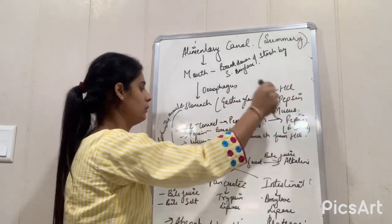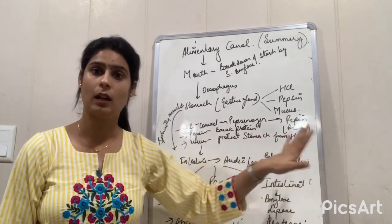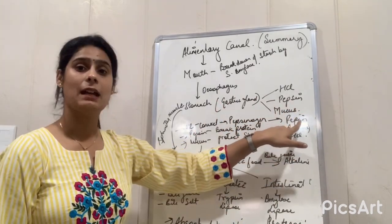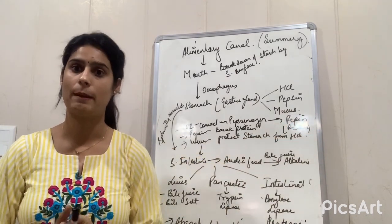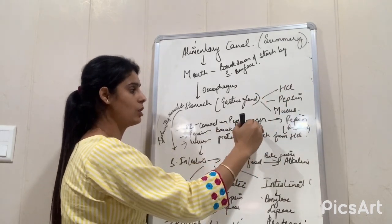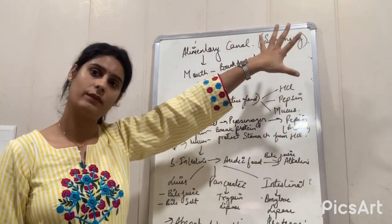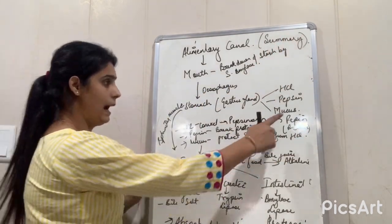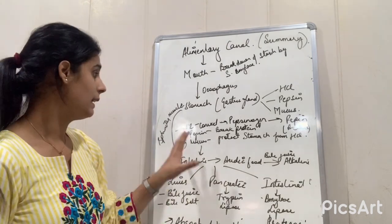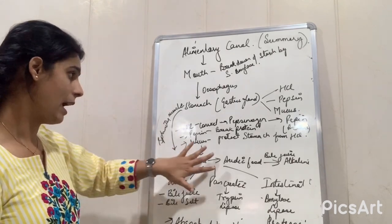The food then goes from the oesophagus or food pipe to the stomach. The stomach has gastric glands which secrete three things: HCl, pepsin, and mucus. HCl is hydrochloric acid; it converts pepsinogen to pepsin. Pepsin is an enzyme present in the gastric gland in inactive form as pepsinogen, which is activated to pepsin by HCl. Pepsin helps in breakdown of protein. Mucus protects the stomach from the harmful effects of HCl.